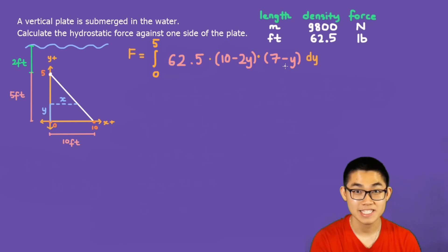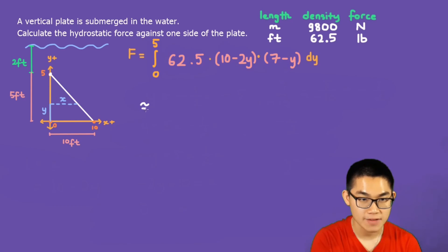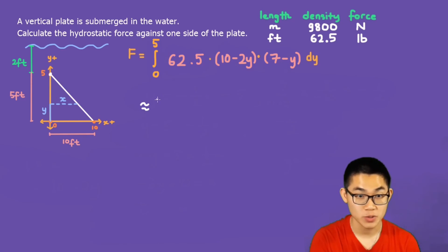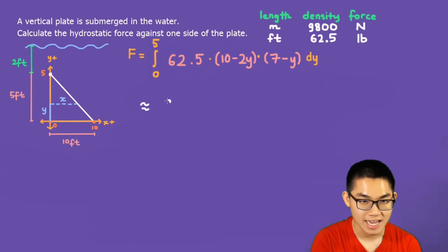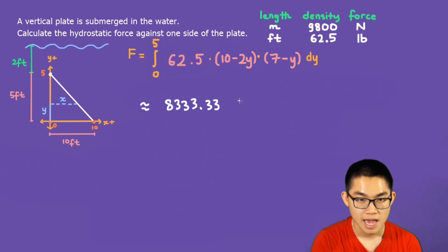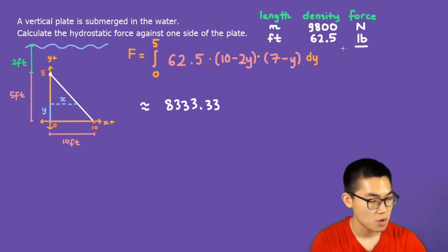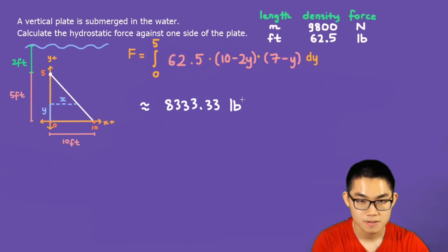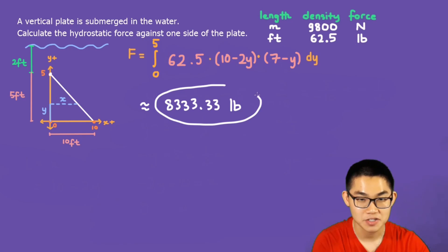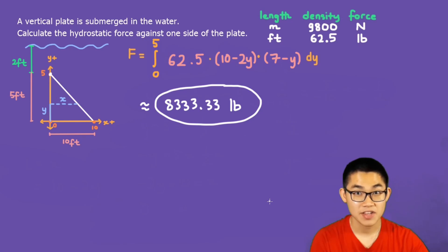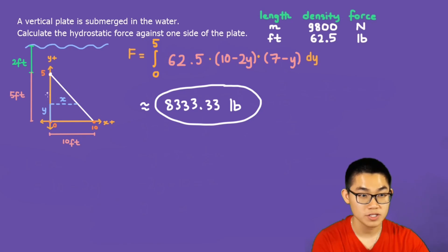This integral is straightforward to solve. After evaluating it, you should get 8,333.33 pounds — since the problem is in feet, the force is in pounds. That is the answer to this question. In the next video, I will show you how to calculate the hydrostatic force when the shape is a trapezoid.